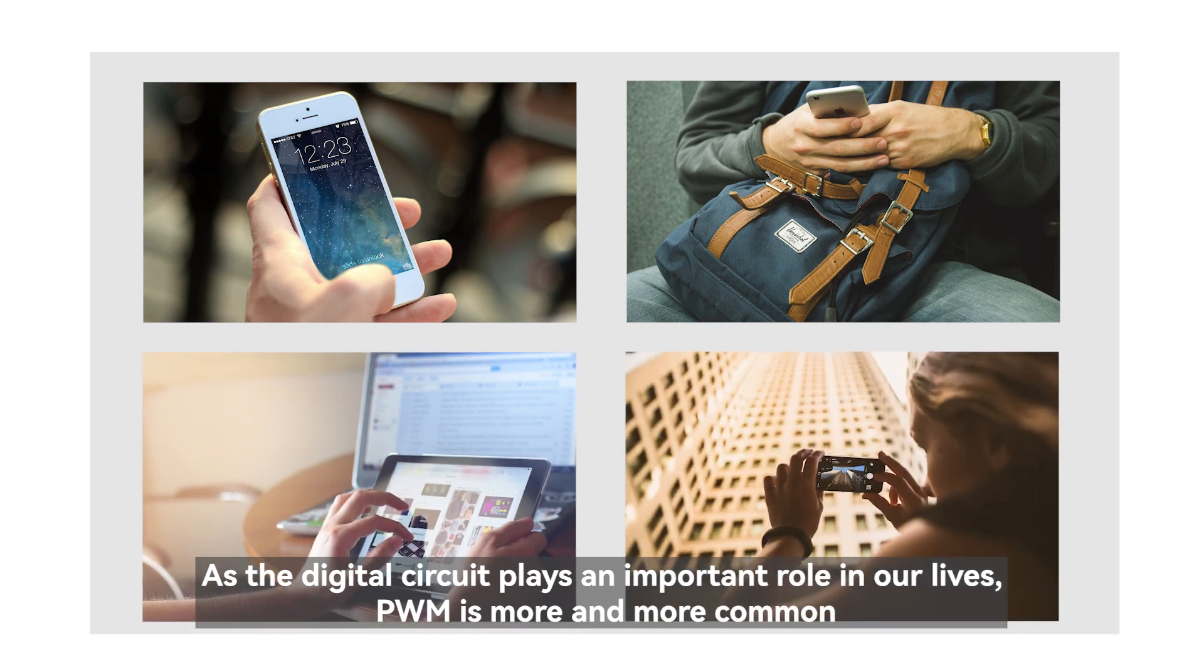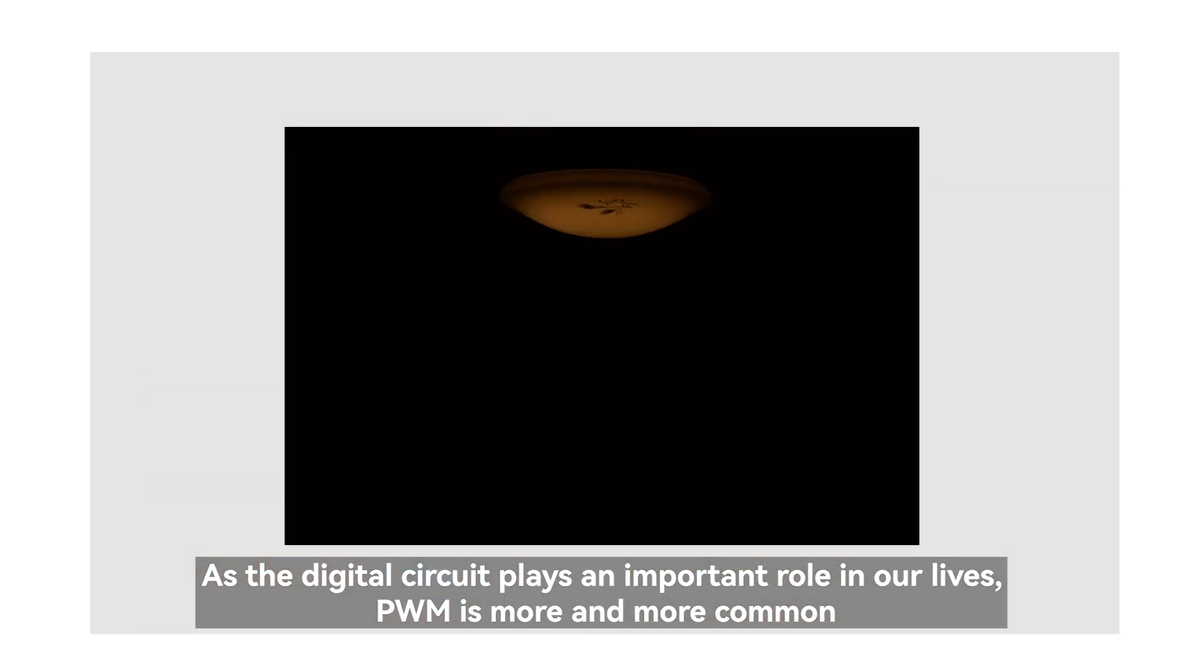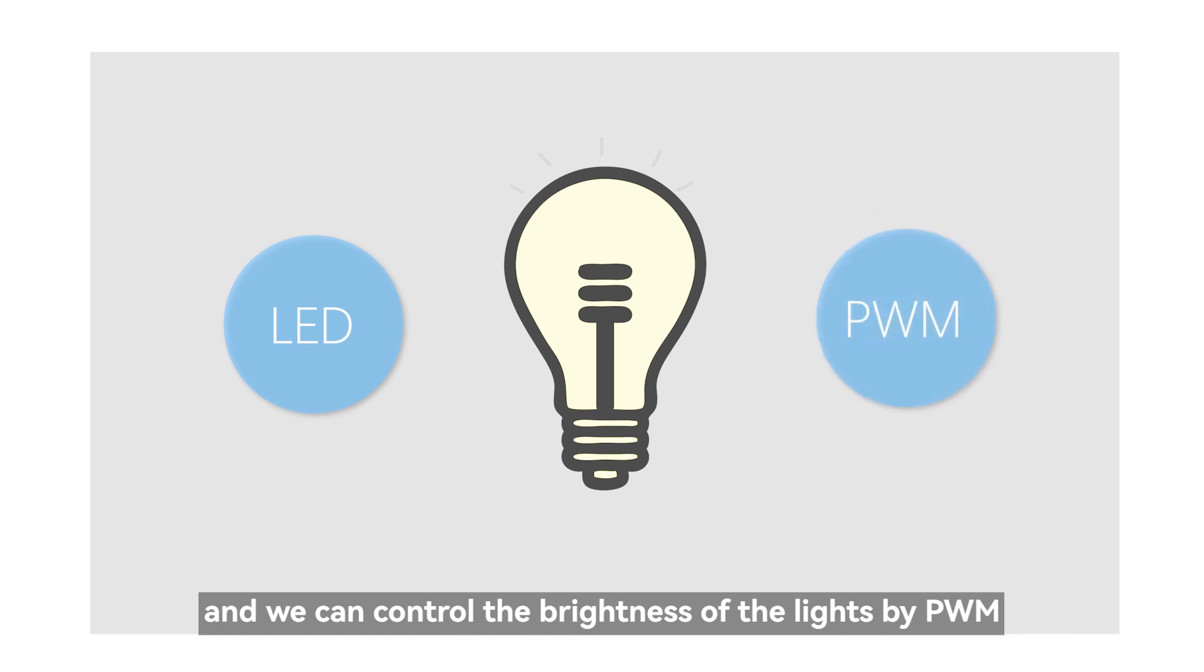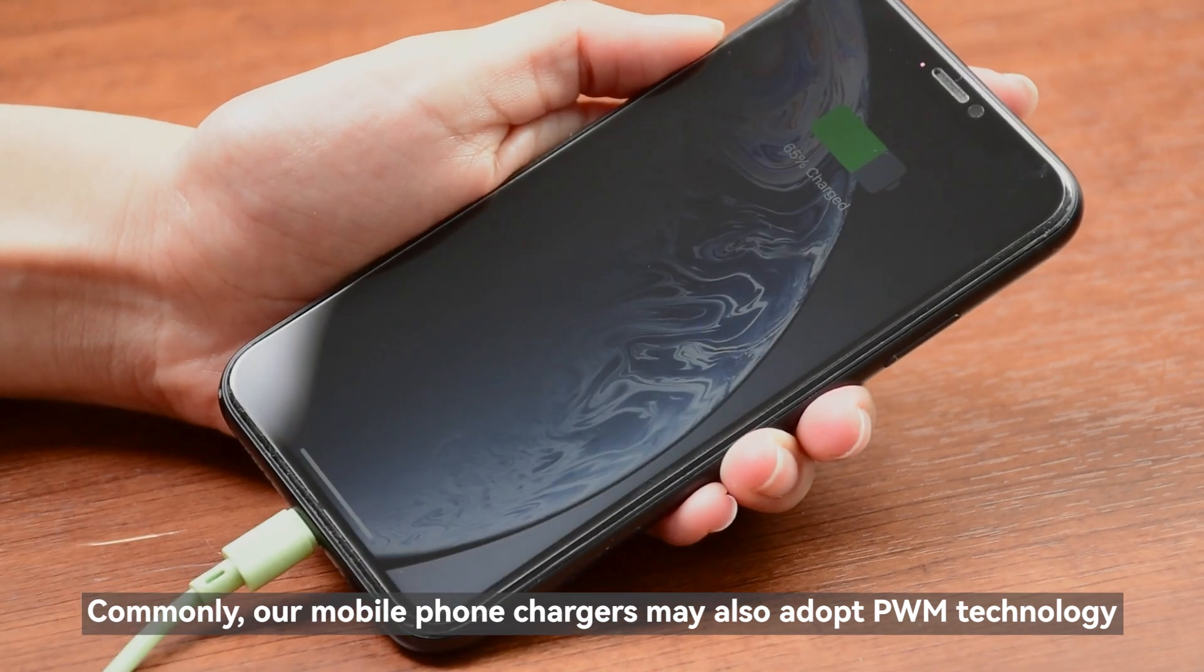As the digital circuit plays an important role in our lives, PWM is more and more common. For example, the current energy-saving lamps are basically LED, and we can control the brightness of the lights by PWM. Commonly, our mobile phone chargers may also adopt PWM technology.